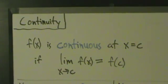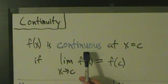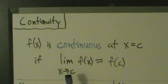Hey guys, so let's go ahead and start talking about continuity. The definition is: f(x) is continuous at x equals c if the limit as x approaches c of f(x) equals f(c).